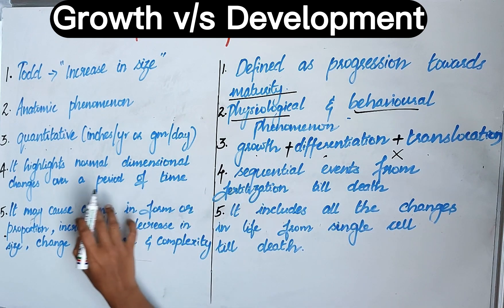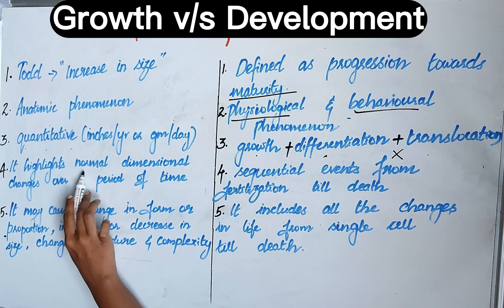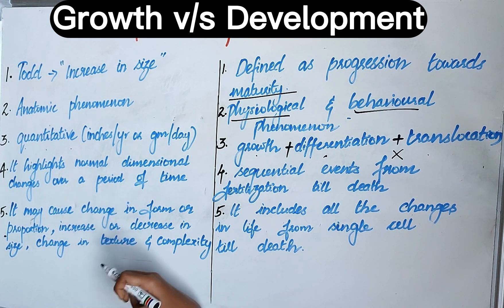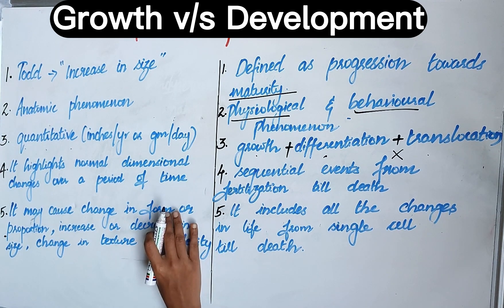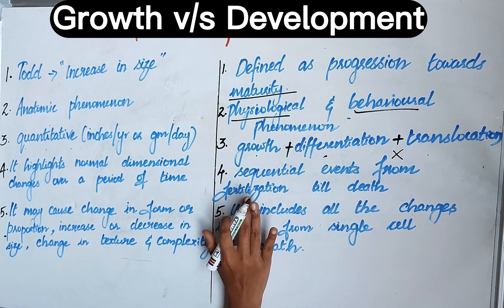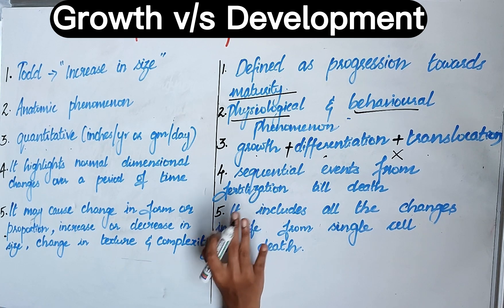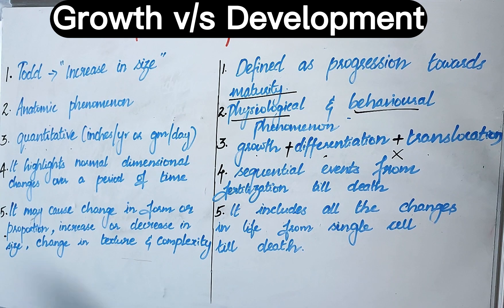Fourth difference: growth highlights the normal dimensional changes over a period of time — it shows the change in size over a period of time. Whereas development shows all the events in the life of a person from fertilization till death.